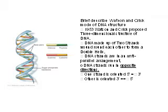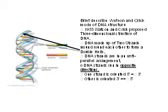To briefly describe the Watson and Crick model of DNA structure, Watson and Crick proposed a three-dimensional structure of the DNA. DNA is made up of two strands wound around each other to form a double helix.